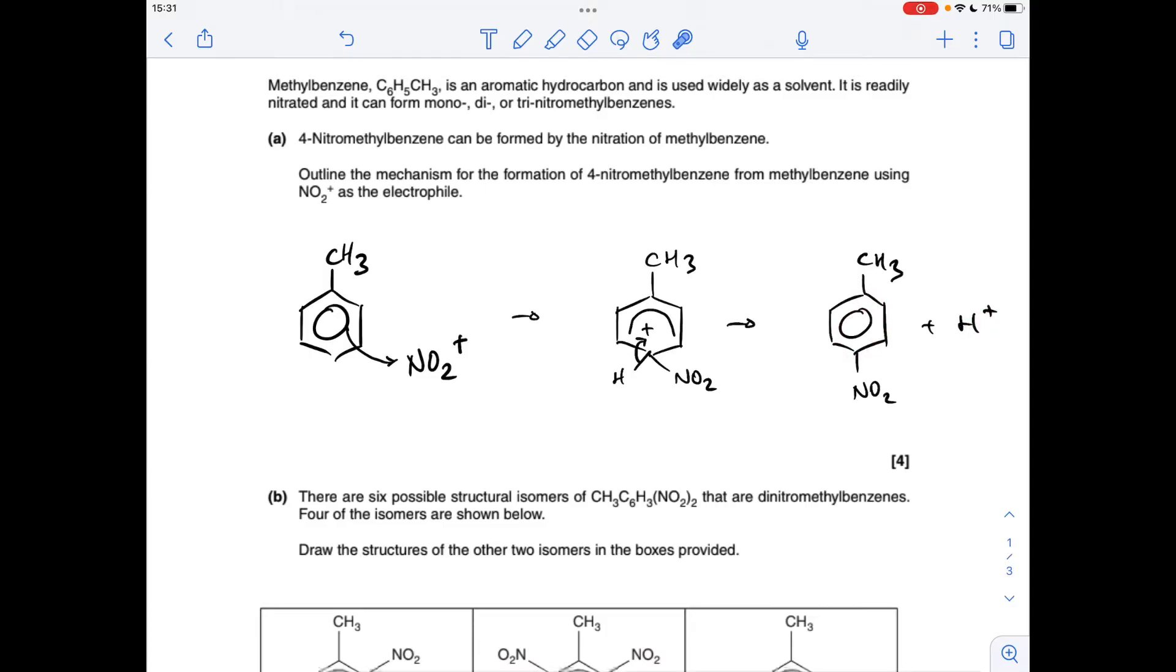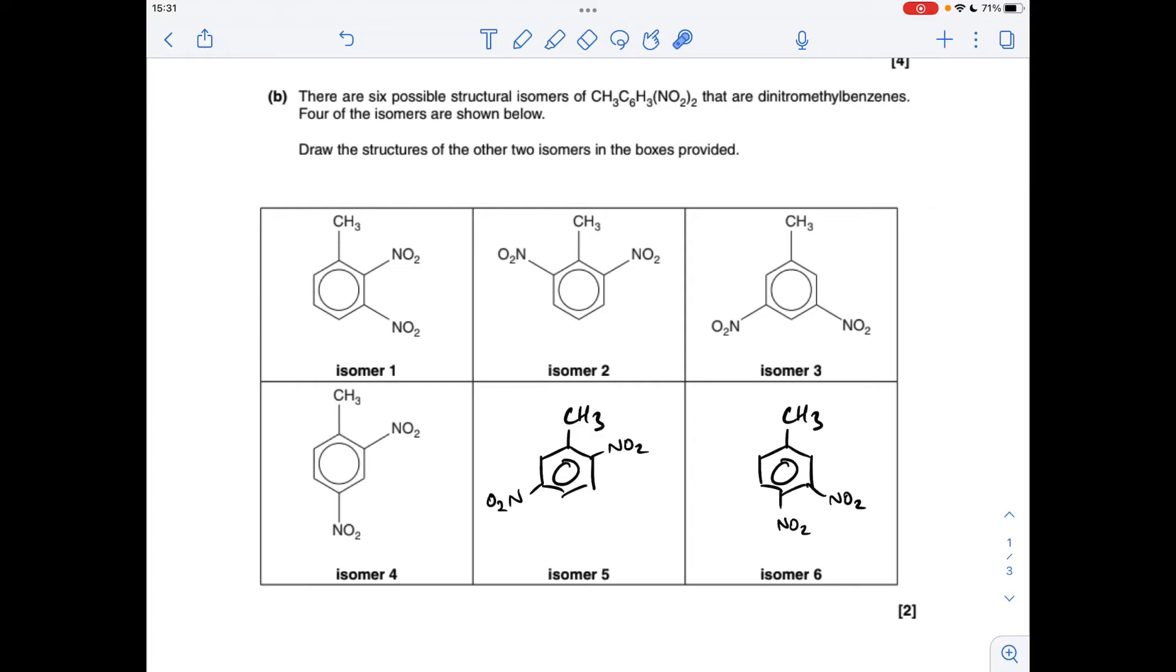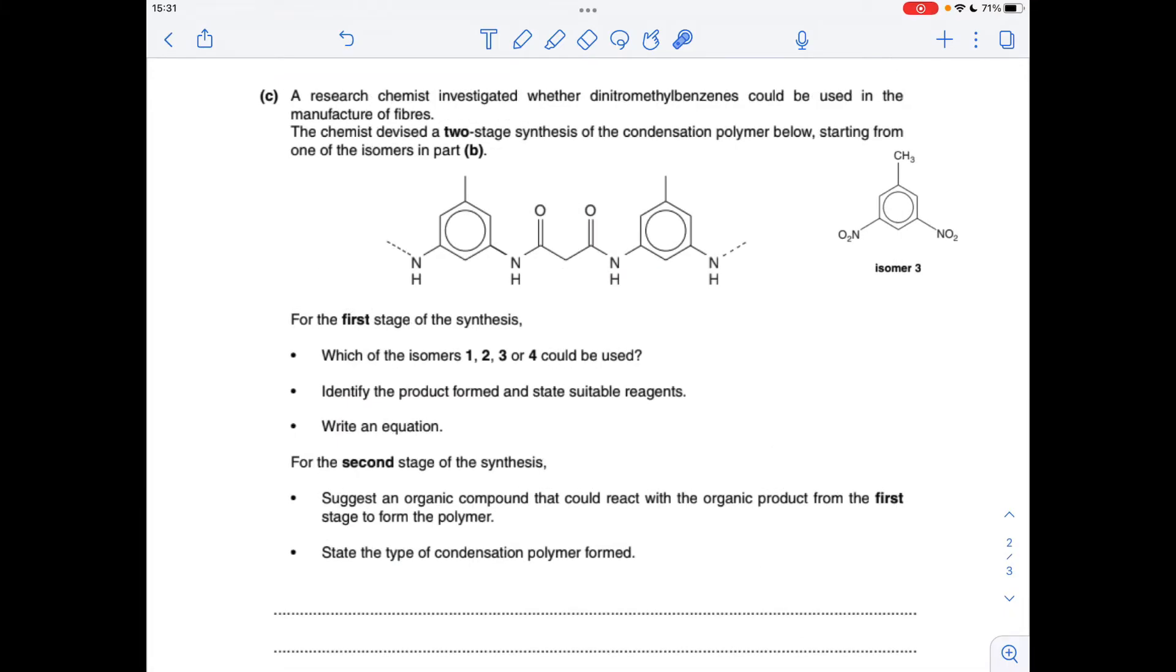The two missing isomers were the 2,5-isomer and the 3,4-isomer. They can be either way around, but they were the answers. Moving on to the production of this polymer, you can see I've copied and pasted isomer 3. Isomer 3 is the one you need to use because of the relative positions of the nitrogens in the polymer.